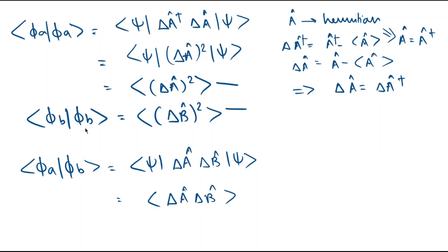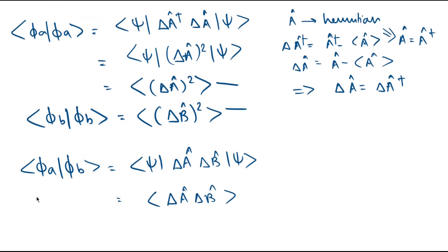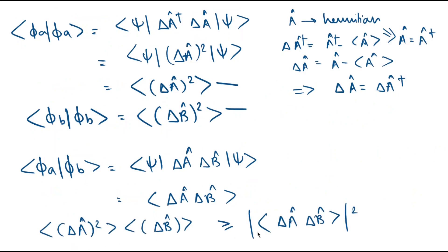Putting all these values into equation A, we arrive at: expectation value of delta-A-cap squared times expectation value of delta-B-cap squared is greater than or equal to the modulus squared of the expectation value of delta-A-cap times delta-B-cap. Let's name this equation B.